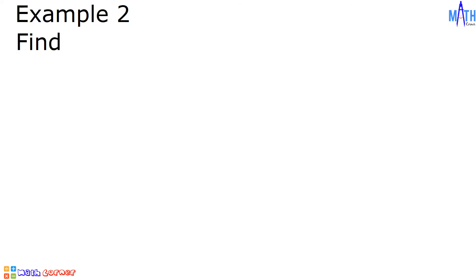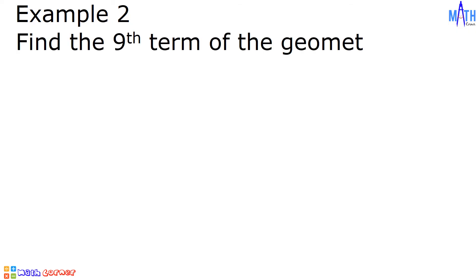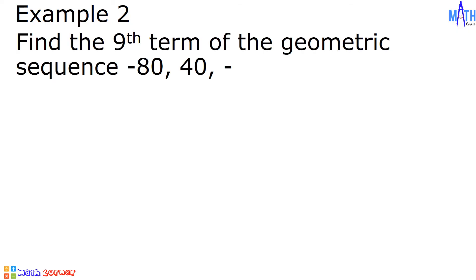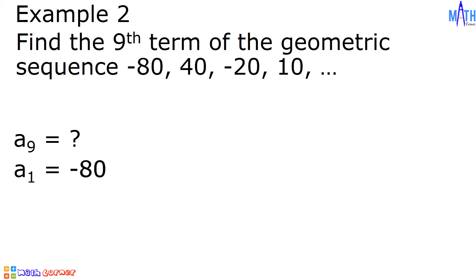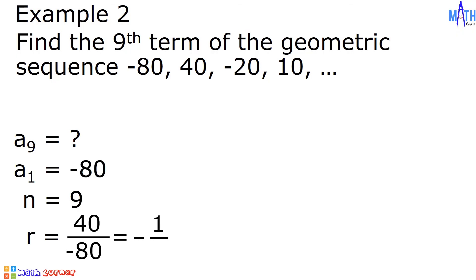Example number 2: Let us find the 9th term of the geometric sequence negative 80, 40, negative 20, 10, and so on. We have a sub 9 as the missing term. Negative 80 is the first term. n is equal to 9. To find the common ratio, we divide any term by its preceding term: r is equal to 40 divided by negative 80, which gives negative one-half.